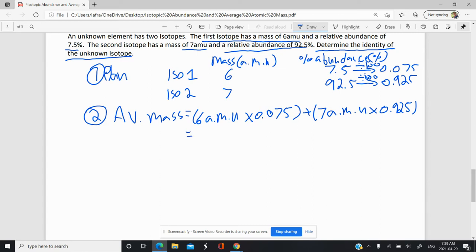And let's go ahead and try that out. So I'll open my brackets, 6 times 0.075 plus 7 times 0.925. And I get approximately 6.925 atomic mass units as the average atomic mass.